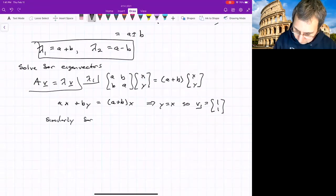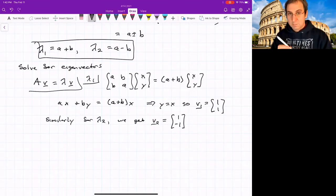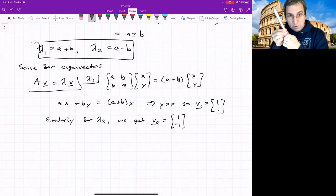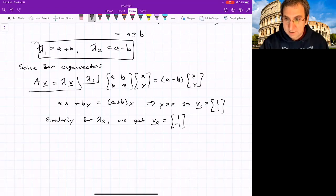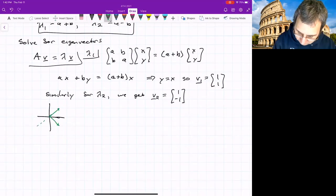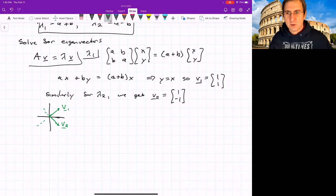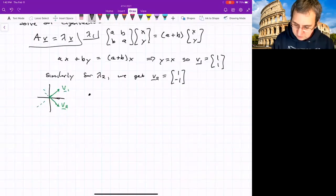Similarly, for lambda 2, we can get V2. So V1 is in the positive 45 degree angle from X dot. And then V2 is negative 45 degrees. So we can look at the situation now. We've got the eigenvectors. We've got these eigendirections. But we don't know what the dynamics will look like. We don't know how to draw the arrows. So we've got to look at some cases.